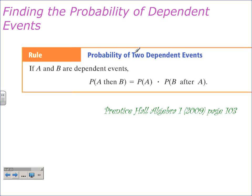When we find the probability of two dependent events, we have a rule. It's basically the same rule as we saw with independent events. If A and B are dependent events, the probability of A then B is equal to the probability of A times the probability of B after A. This means there's going to be a change in the actual probability itself, in the numbers.